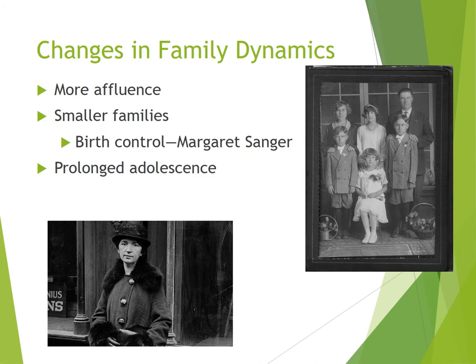Another component of the 1920s story involves changes in family dynamics. The growing affluence of America meant that fewer children were needed to work outside the home, freeing them from a lot of responsibility. More children were able to continue with higher education, and some families were able to purchase their own homes rather than living with extended families. As couples gained access to effective birth control methods, it enabled them to limit their number of children.